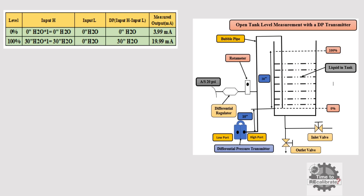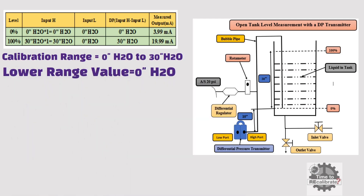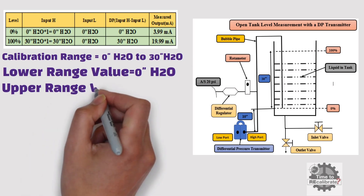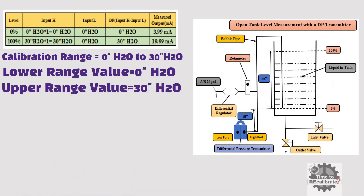Now let's understand the calculation for 100% level. At 100% level, the transmitter high side has 30 inch H2O pressure — 30 inches is the distance from 0% level to 100% level. The transmitter low side is open to air, so it has 0 inch H2O pressure at 100% level. Therefore, the differential pressure is 30 inch H2O at 100% level, and the calibration range is 0 inch H2O to 30 inch H2O. We have to set 0 inch H2O as the lower range value and 30 inch H2O as the upper range value in the DP transmitter using a HART communicator.